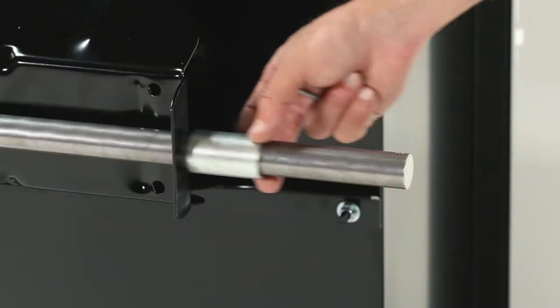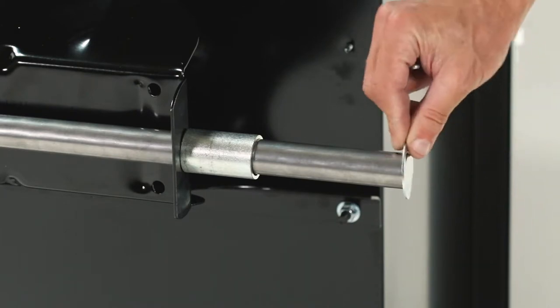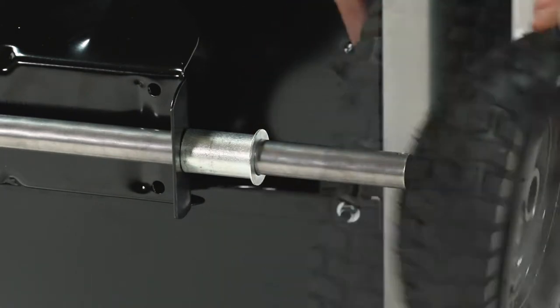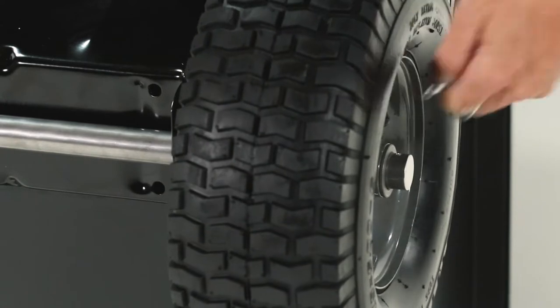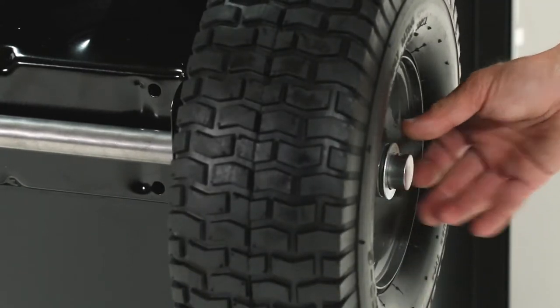Next, slide a spacer tube onto the axle. Then, slide on a 1-inch flat washer. Now, slide on a wheel with the valve-stand facing out. Then, slide on another 1-inch flat washer.